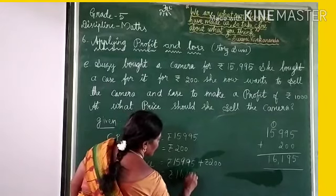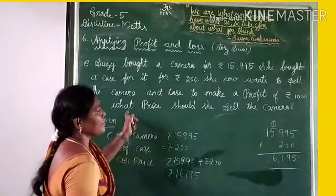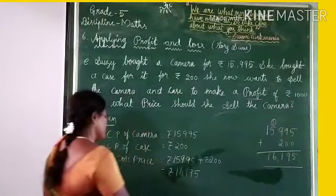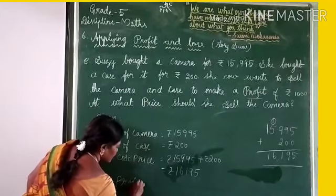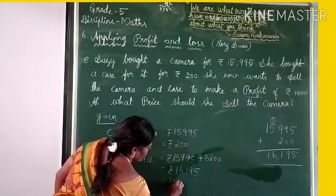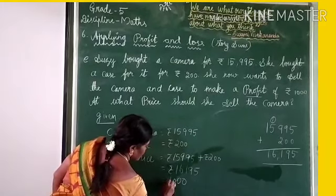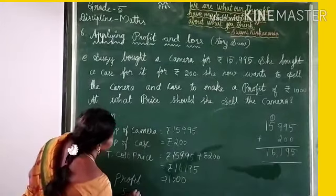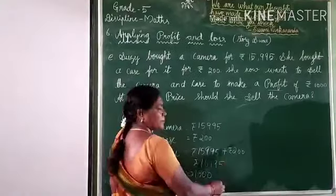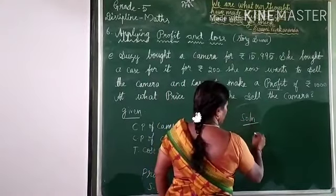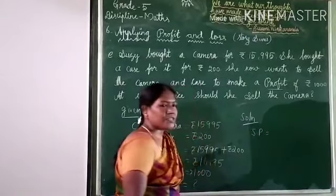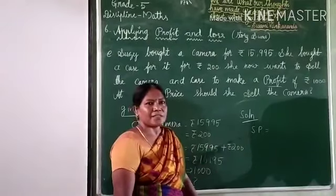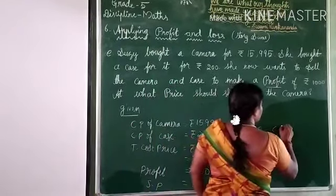Then rupees 16,195 is the total cost price. Then again what was given? To make a profit of rupees 1000. So profit is rupees 1000. Now we have to find out the selling price. What is the formula for selling price? Cost price plus profit — very good!